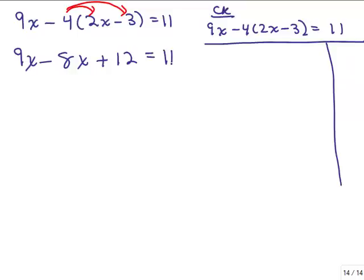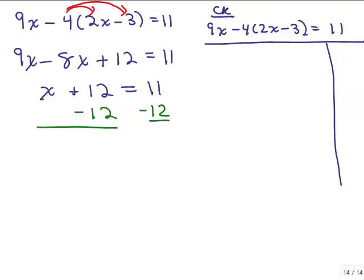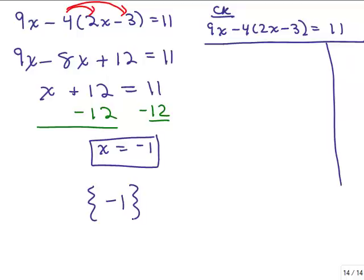The left side is still not simplified. I have to do 9x minus 8x, which is x. So I have x plus 12 equals 11. Subtract 12 from both sides, and I get x equals negative 1. So it looks like our answer will be a solution set of negative 1.